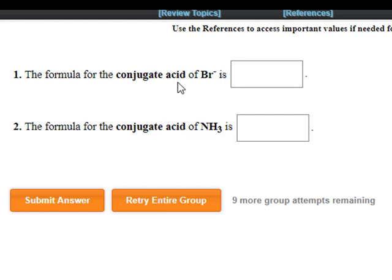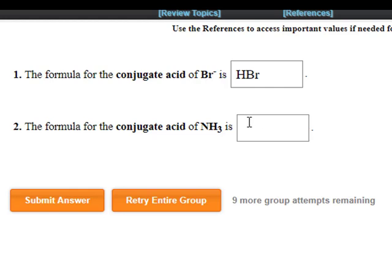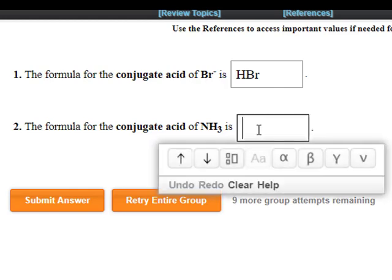Here, the formula for the conjugate acid of bromide is HBr, and the conjugate acid of NH3 is NH4 positive.